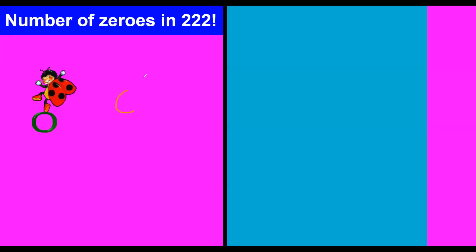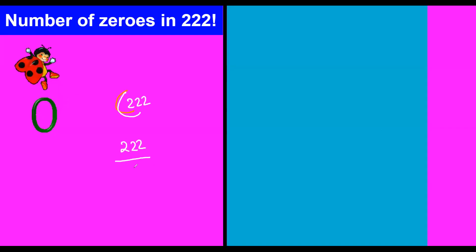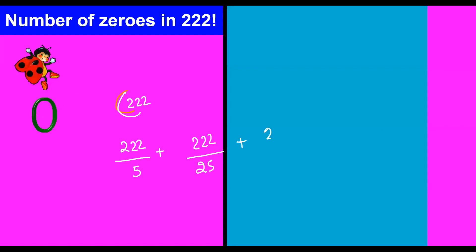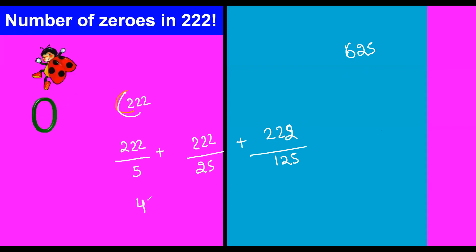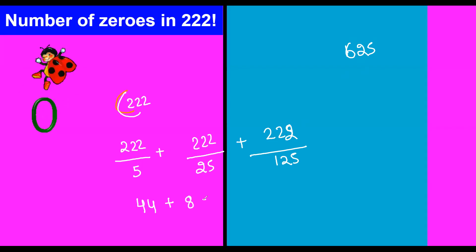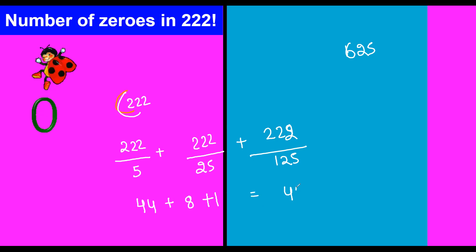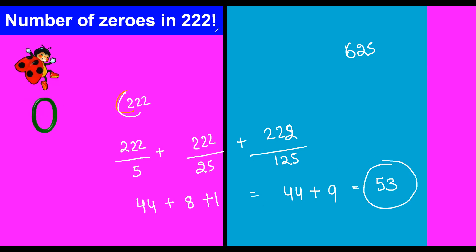Now when you have 2222 factorial: we divide 222 by 5, then by 25, then by 125. The next power of 5 is 625, which is bigger, so we stop. 222 divided by 5 is 44. 222 divided by 25 is 8. 222 divided by 125 is 1, because 125 × 2 would be 250, which is more. So 44 + 8 + 1 = 53. That means we have 53 trailing zeros in 2222 factorial.